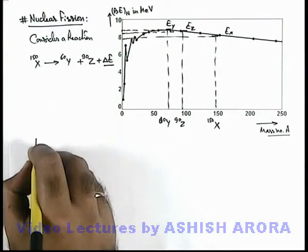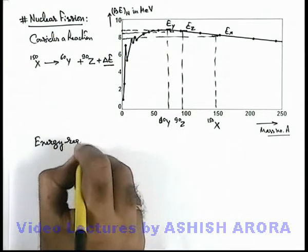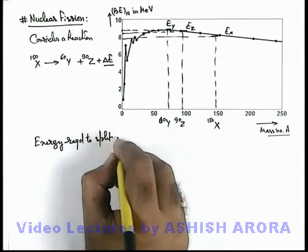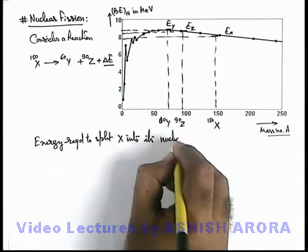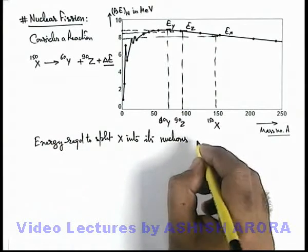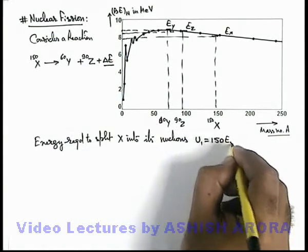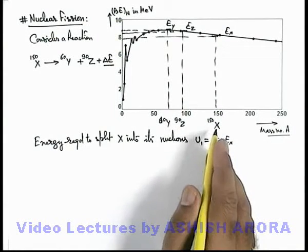If we just write down energy required to split X into its nucleons, this can be written as say U1, and that will be equal to 150*Ex, because Ex is the binding energy per nucleon for the element X.